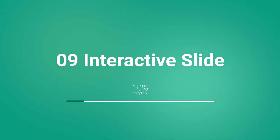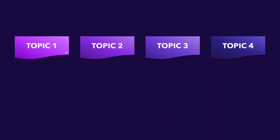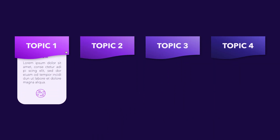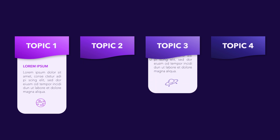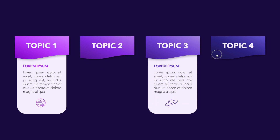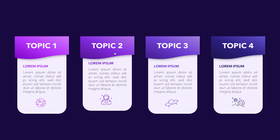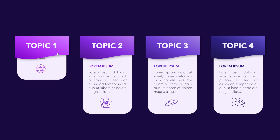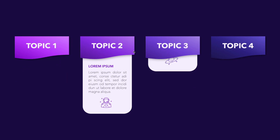That brings us to number nine: interactive slides. This style lets you navigate through the slide in a non-linear way — if you click on topic one it will appear, but you can also go to number three or four in any order. The content will appear according to your presentation, so you can get interaction with the audience and have a custom presentation built for you.